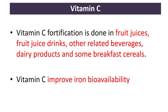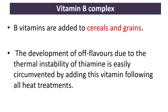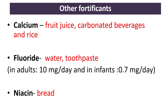Vitamin C fortification is done in fruit juices, produce drinks, other beverages, dairy products, and some breakfast cereals. Vitamin C improves iron bioavailability. B vitamins are added to cereals and grains. The thermal instability of thiamine is easily circumvented by adding this vitamin following all heat treatments.